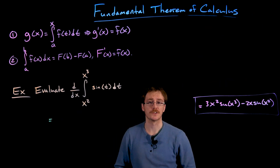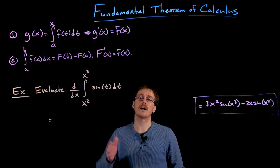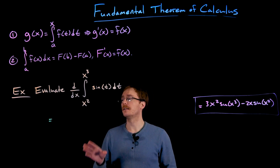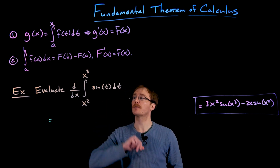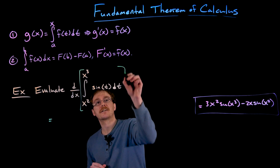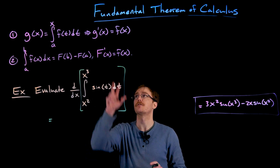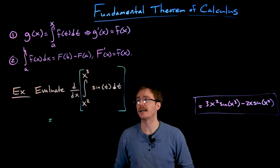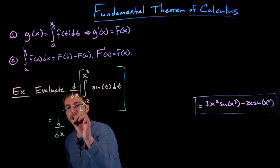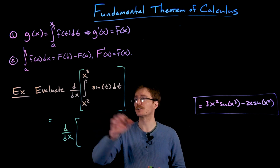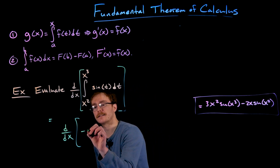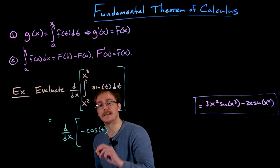Another way we could have approached this example is using the second part of the fundamental theorem of calculus, though this is not considered the proper approach — I'll explain why at the end. If we use FTC part 2, the first thing we do is actually evaluate our integral before we differentiate. We have to remember that the antiderivative of sine of t is negative cosine of t.